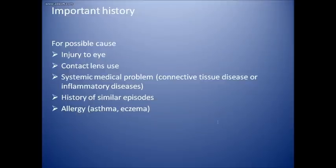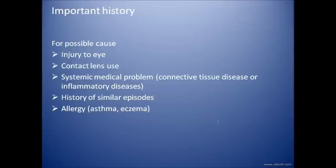Important history to take in a patient with red eye includes any injury to the eye, and contact lens use — which is very common these days and can lead to contact lens-related keratitis and acute loss of vision. A good systemic history is also important, especially history of connective tissue disease or inflammatory diseases like Crohn's disease, ulcerative colitis, or rheumatoid arthritis, all of which can be associated with iridocyclitis, a cause of red eye.